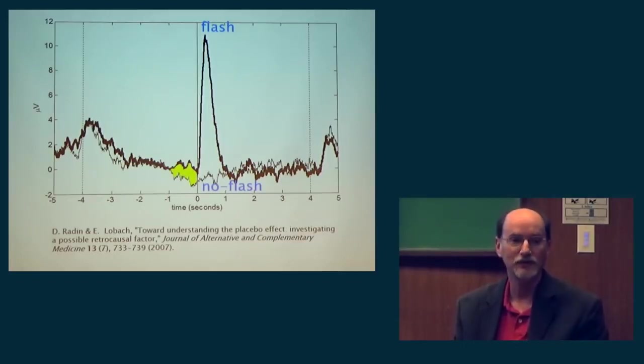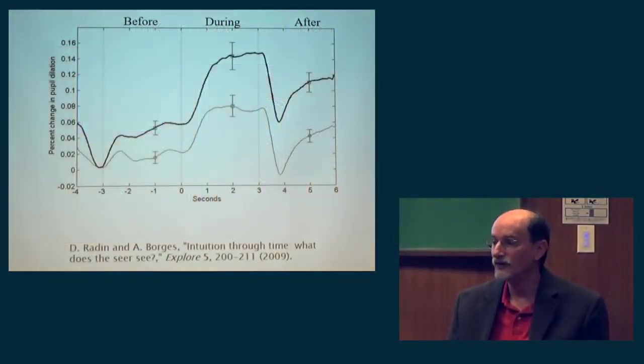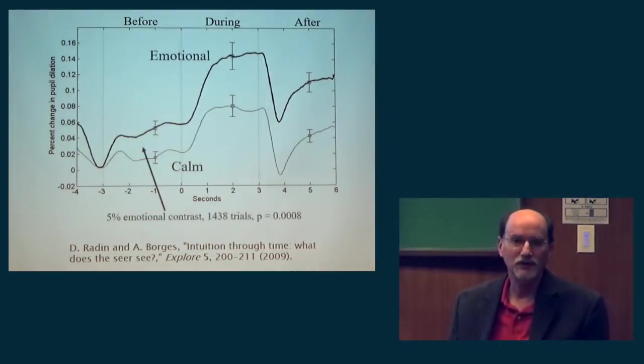That's in the brain. We've done the same kind of thing in pupil dilation. And in pupil dilation, you see a very big difference about three seconds before the image appears. These are randomly selected. In most of these experiments, we use a true random generator so that it's unpredictable even by the computer. The computer reaches out for a number, the machine gives it a number and presents the picture. By the way, the picture is selected immediately before it's shown. So the physiology is already recorded before the stimulus is selected.